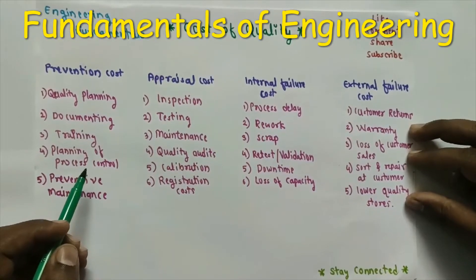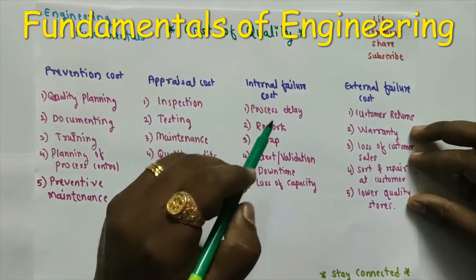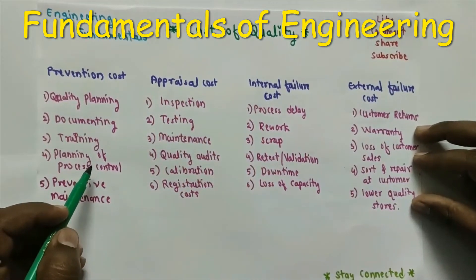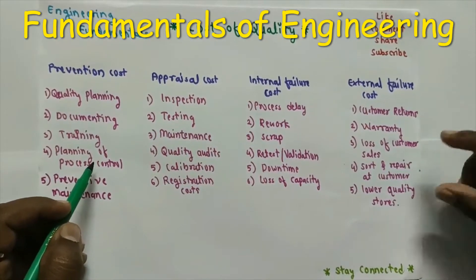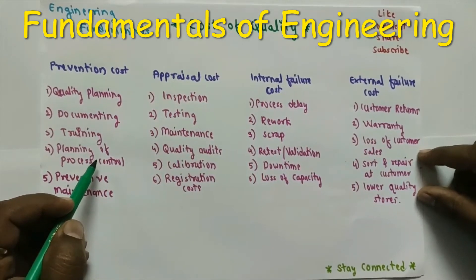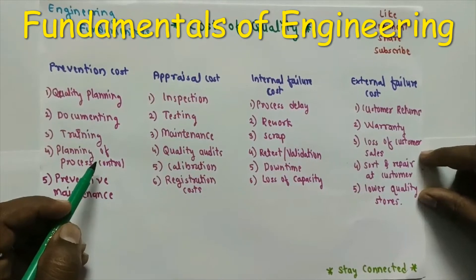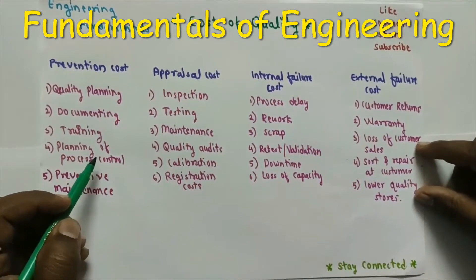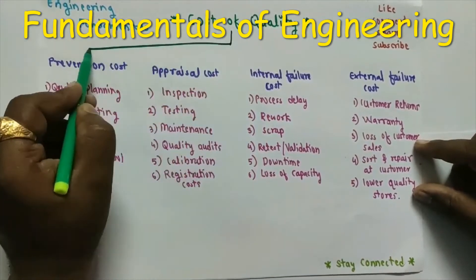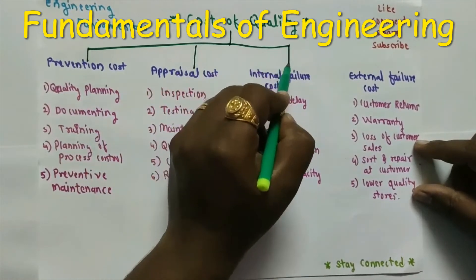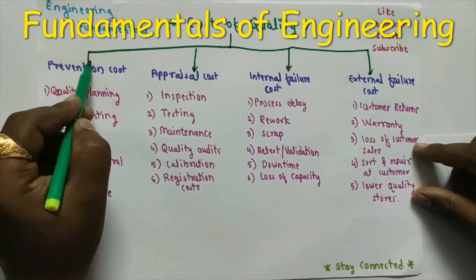In today's lecture we are going to see cost of quality and value of quality. Quality losses occur in any manufacturing industry due to many causes: selection of poor input, selection of poor technology, or poor product design. Broadly, the cost of quality is divided into four costs.